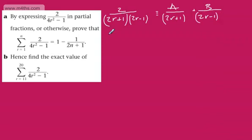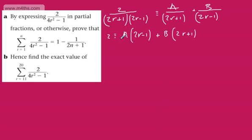Multiplying through by the denominator, we can see that 2 is going to be identical to A multiplied by 2r minus 1, plus B multiplied by 2r plus 1. Looking at the terms in r, we've got 2A plus 2B equals 0r, so we can say A plus B equals 0.